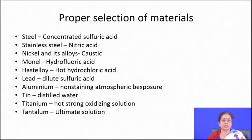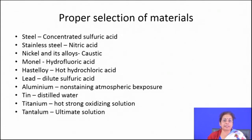For proper selection of materials, especially for aqueous corrosion, charts provide guidelines on which materials will not corrode in particular environments for general corrosion. Steel is highly safe for concentrated sulfuric acid; stainless steel is safe in nitric acid; nickel and its alloys are safe in caustic solution; Monel is safe in hydrochloric acid; Hastelloy is safe in hot hydrochloric acid; lead is safe in dilute sulfuric acid; aluminium in non-straining atmospheric exposure; tin in distilled water; titanium in hot strong oxidizing solution; and tantalum is safe in all environments.